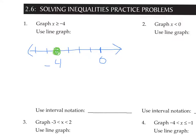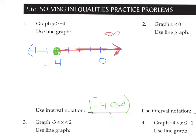x is greater than or equal to negative 4, so we're going to shade all the values that are greater than negative 4. It doesn't tell us where to stop, so those values go off into infinity. For the interval notation, we're just making a snapshot of this graph. Because the left boundary is closed at negative 4, we use brackets. The right boundary is infinity, and infinity always has parentheses. So that's the interval notation for that graph.